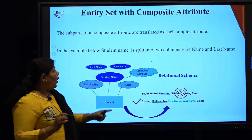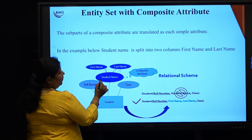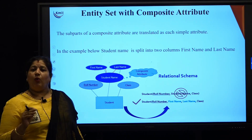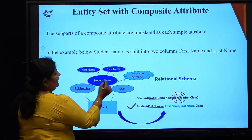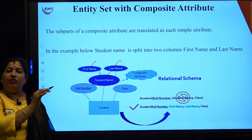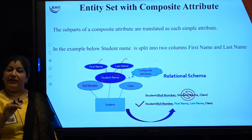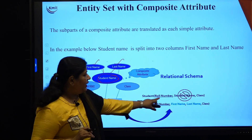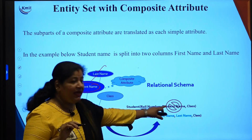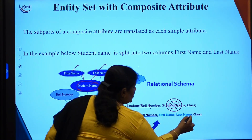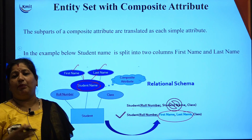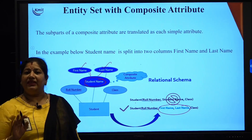If an entity has a composite attribute — one which can be further subdivided — instead of representing it as a single attribute, each sub-part becomes an individual column in the new table. For example, 'student name' is a composite attribute consisting of two parts: first name and last name. Those two subdivided parts become the individual columns in the new table.